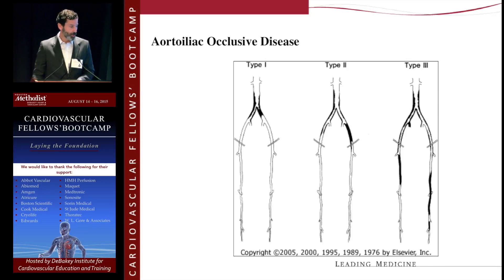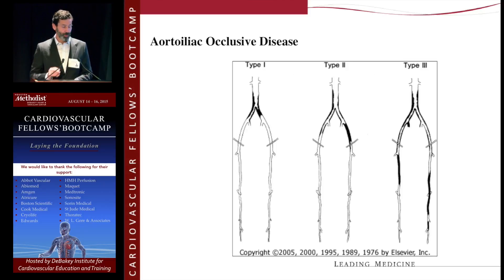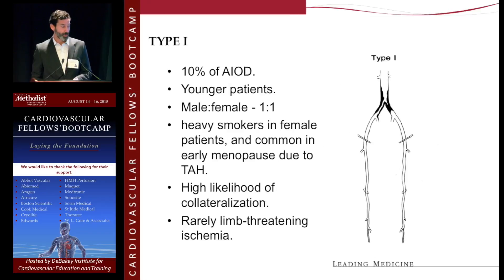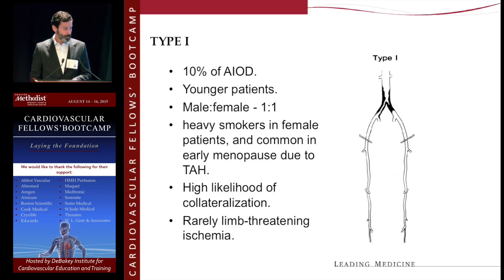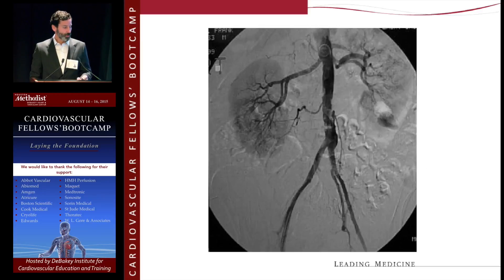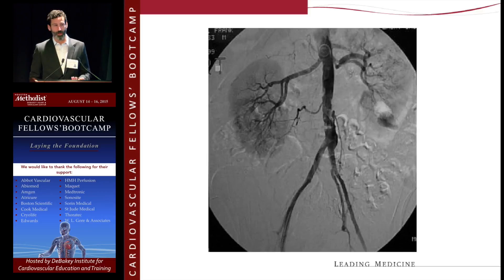We generally see three patterns of aortoiliac occlusive disease. The first is isolated aortic bifurcation disease or proximal common iliac disease — the least common pattern. This occurs generally in younger patients, typically smokers, with about an equal distribution between males and females. There's a high likelihood of collateralization, so many of these patients are minimally symptomatic or asymptomatic, and rarely does single-level disease produce limb-threatening ischemia. We're generally intervening for thigh or buttock claudication. This is a typically bulky calcific, eccentrically located disease within the lumen, which is a somewhat difficult pattern to treat with endovascular therapy.